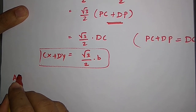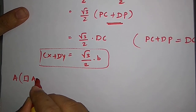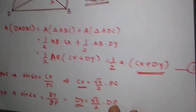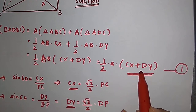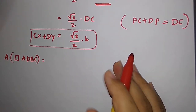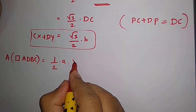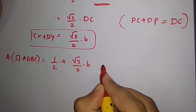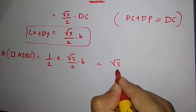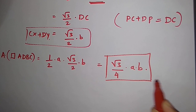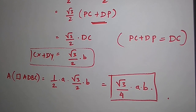So the area of quadrilateral ADBC was half times A times (CX plus DY). Since CX plus DY equals (√3/2)·B, we ultimately get the area to be (√3/4)·AB. This is the final answer. Thanks a lot for watching. Please like, share, and subscribe if you find this useful, and press the bell icon to get all updates.